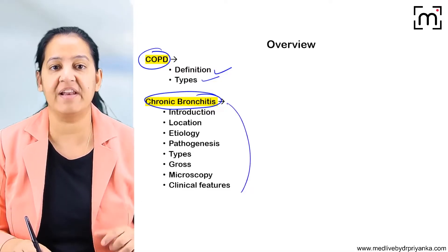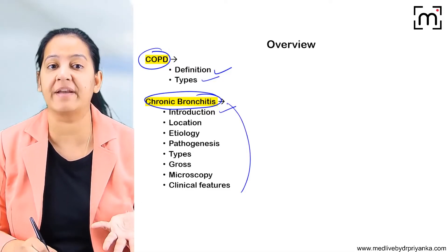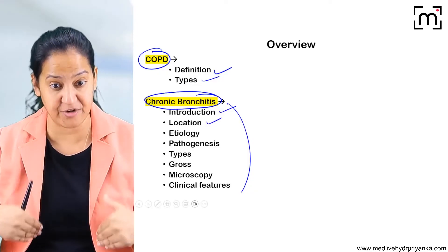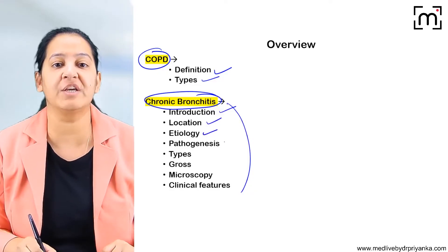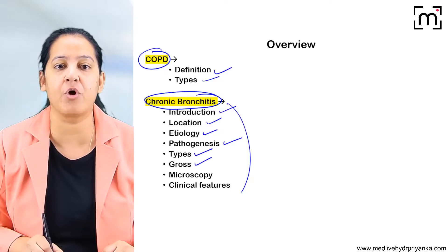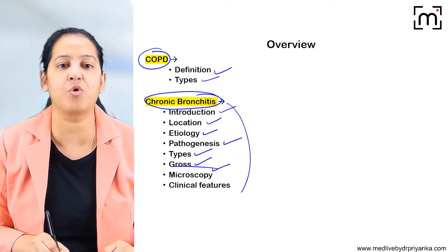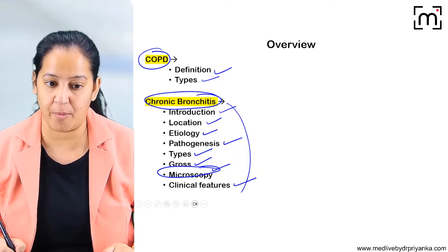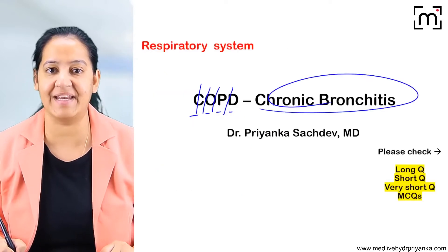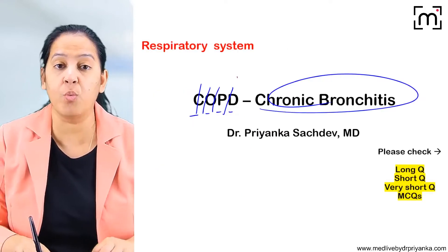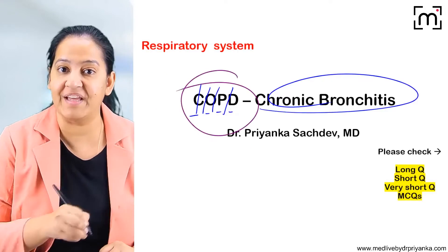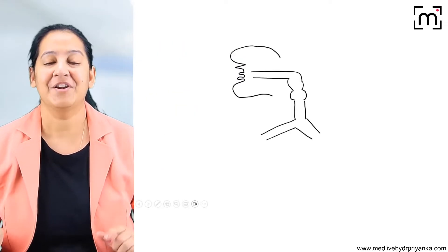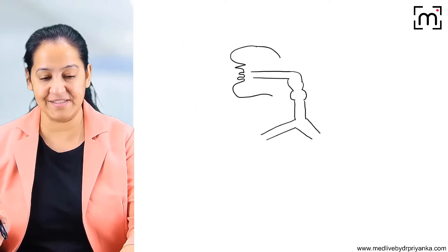I will teach you all four COPDs in a fixed set of headings including chronic bronchitis. First I will cover the introduction, location of obstruction in the respiratory tract, etiology, pathogenesis, types, gross microscopy, and clinical features. First let me explain what is COPD, and then we will start with chronic bronchitis.